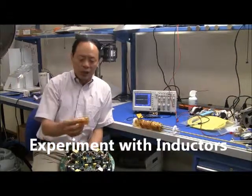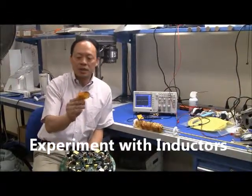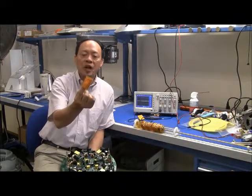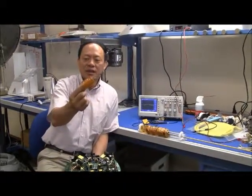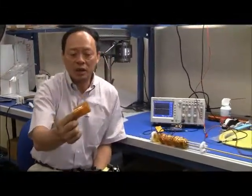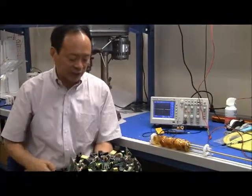Now here I'm showing you a solenoid, which is basically 100 turns of a copper wire. Now you can find solenoids in a lot of electric circuits.